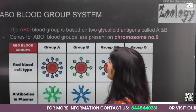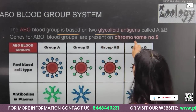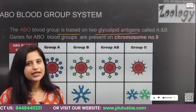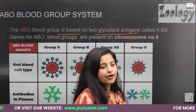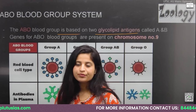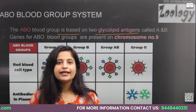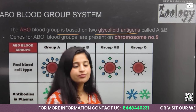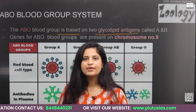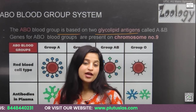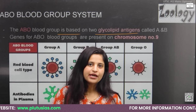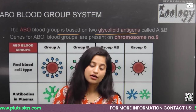The ABO blood group is based on two types of glycolipid antigens: antigen A and antigen B. If a person has antigen A on the surface of RBC, their blood group is A. If they have antigen B, their blood group is B. If they have both antigens, their blood group is AB. If they do not have any antigen on the surface of RBC, their blood group is O.